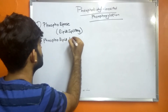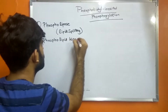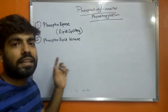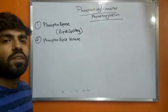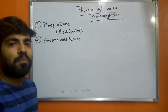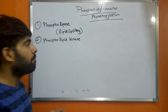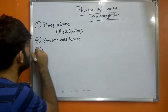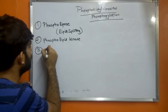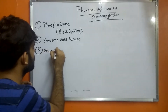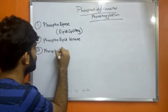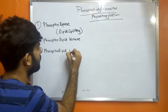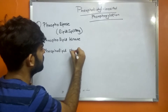The second enzyme is phospholipid kinases. This is the enzyme that adds a phosphate group to the compound. The third one is phospholipid phosphatase, which removes the phosphate group that is present in the compound.